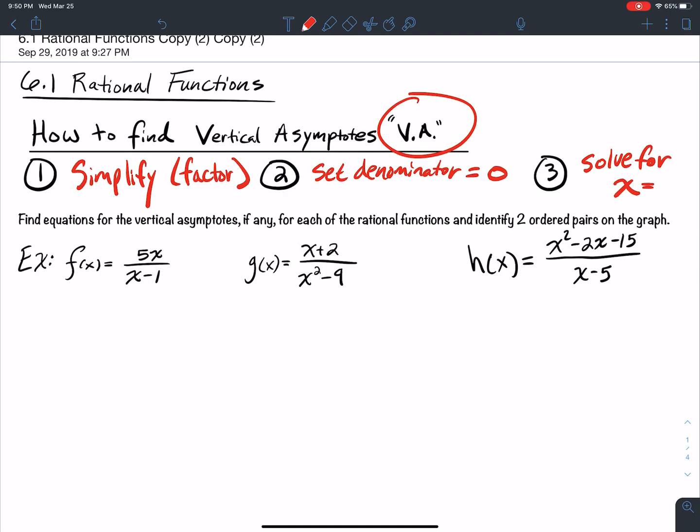For this first one, f(x), I factor the numerator, I simplify. It's already 5x. I can't do anything with the denominator, x-1. I can't cancel anything. So it's simplified as much as possible. Step two says set the denominator equal to zero, so I set it equal to zero and I solve for x. I add 1 to both sides, and when I add 1 to both sides I get x equals 1. So when x equals 1, that's a vertical asymptote for that function.